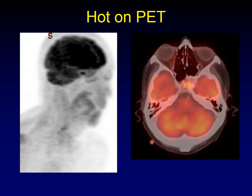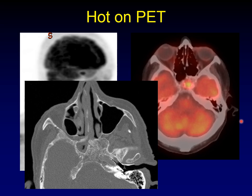Fibrous dysplasia can be very hot on PET. You can see a lesion on PET, and on the corresponding PET-CT it remains a hot lesion right in the middle of the skull base — but it turns out this is just fibrous dysplasia. Presumably the increased FDG avidity is from blood pool from this very vascular lesion.